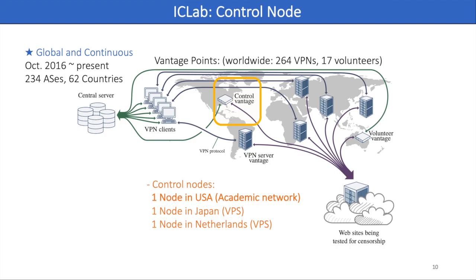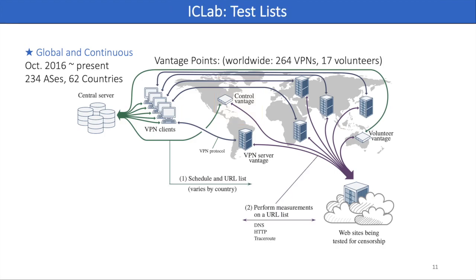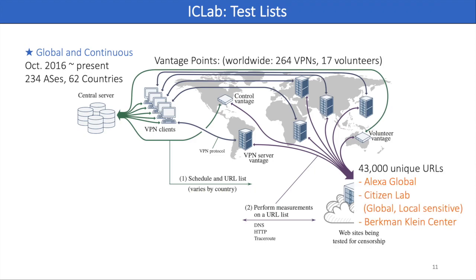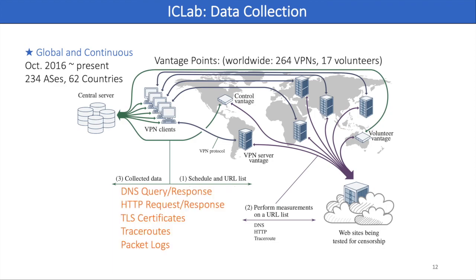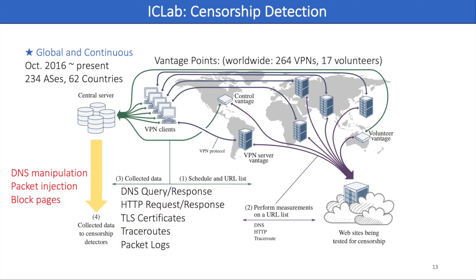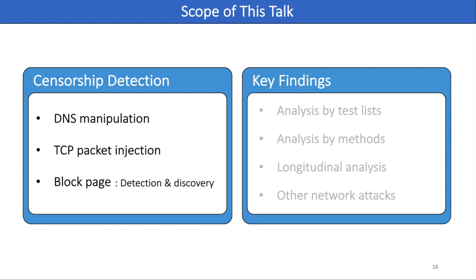The measurements from the control nodes are utilized for censorship detection by comparing them to measurements from our vantage points. Each vantage point tests connectivity to websites in the list issued by Alexa, CitizenLab, and Berkman-Klein Center. When performing measurements, iCELAB collects data at all levels of the network stack, thereby offering reliable detections of network interference by minimizing false positives and false negatives. With the collected data, iCELAB detects three censorship methods: DNS manipulation, block pages, and packet injection.